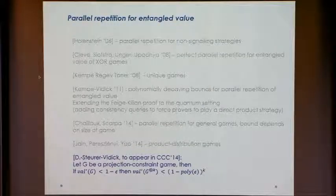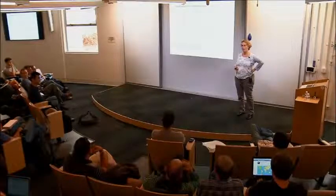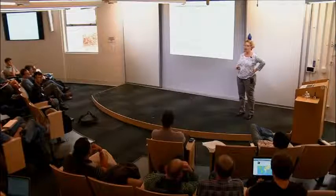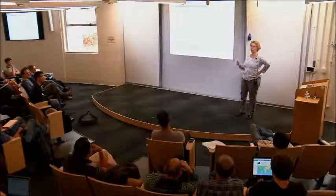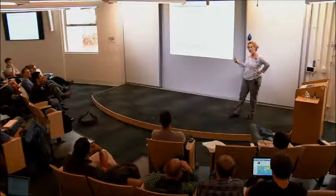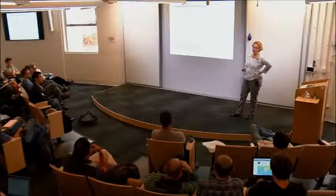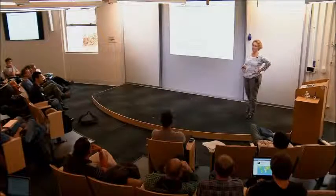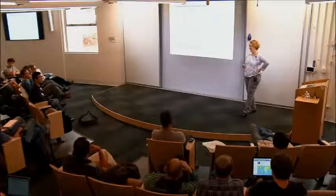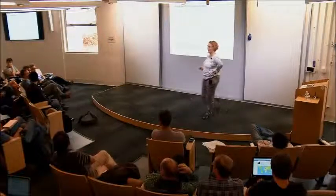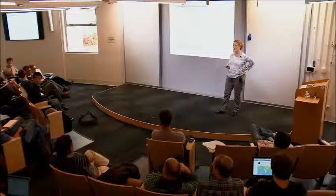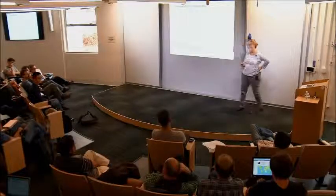What I'm going to talk about is parallel repetition for projection games. Our theorem: if the entangled value of the single game is (1 minus epsilon), then the value of the repeated game goes down like (1 minus epsilon)^4 raised to the k — so it goes down exponentially. Hollenstein proved exponential decay but for non-signaling strategies, which doesn't imply anything for the entangled value, since the non-signaling value might be 1 even when the entangled value is not.